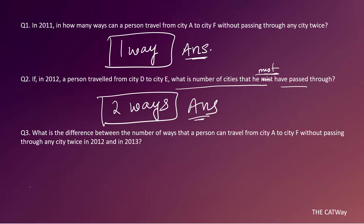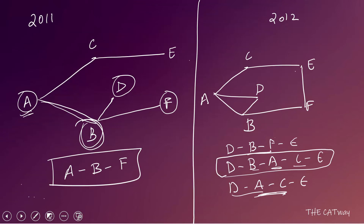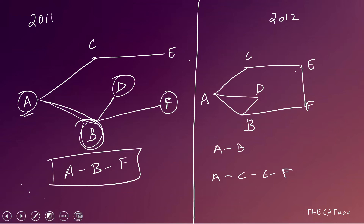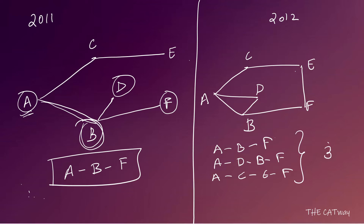Question 3 asks for the difference between the number of ways to travel from A to F in 2012 versus 2011, without passing through any city twice. In 2012 from A, he can go to B then F; or to C then E then F; or to D then B then F. That gives 3 total routes in 2012.